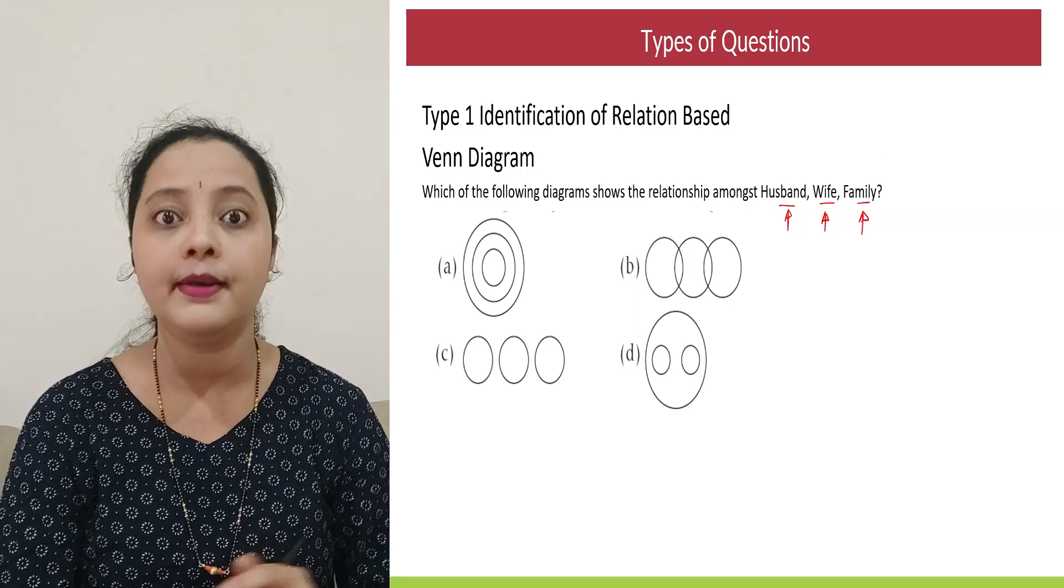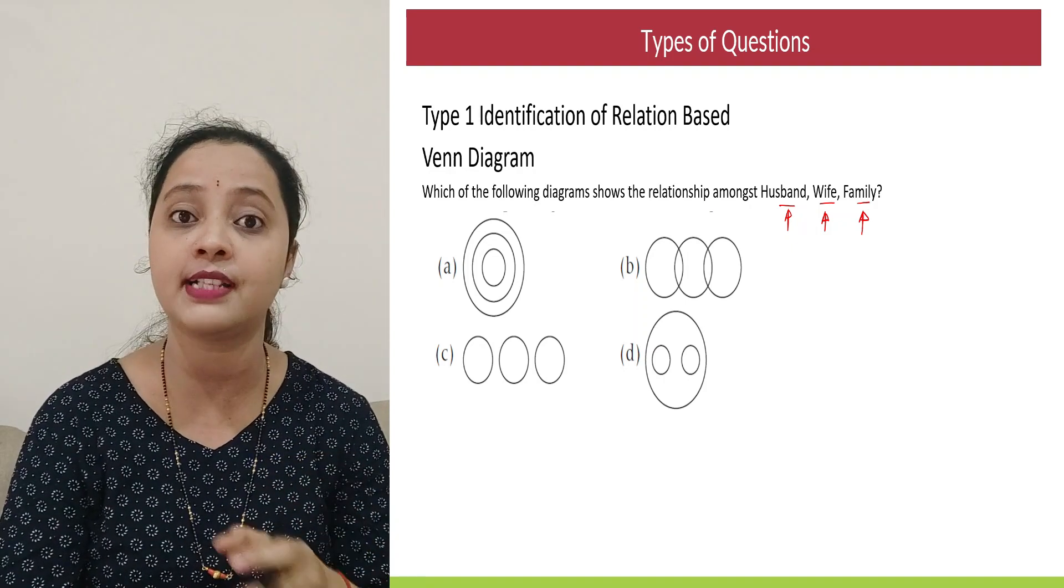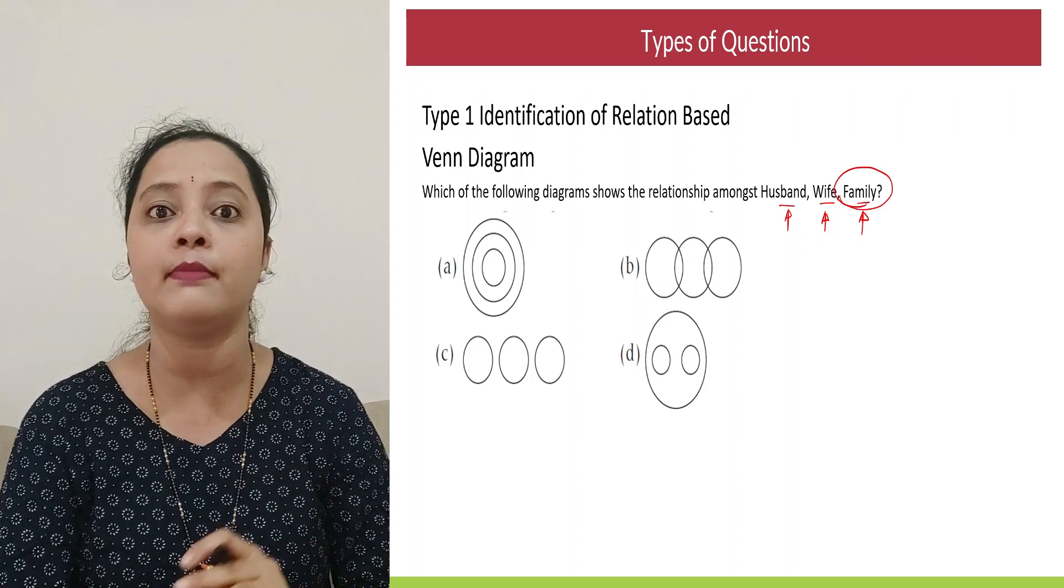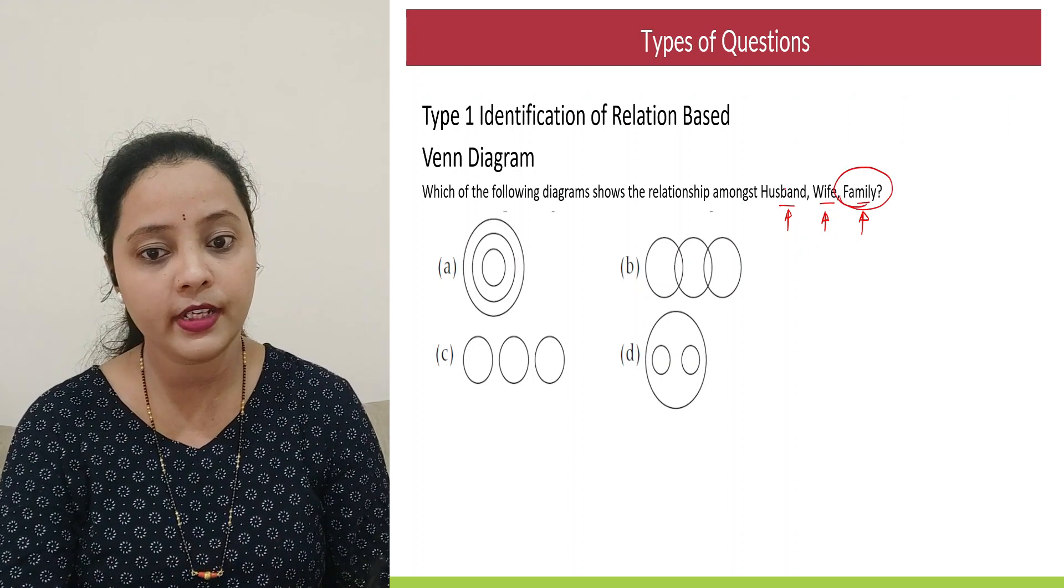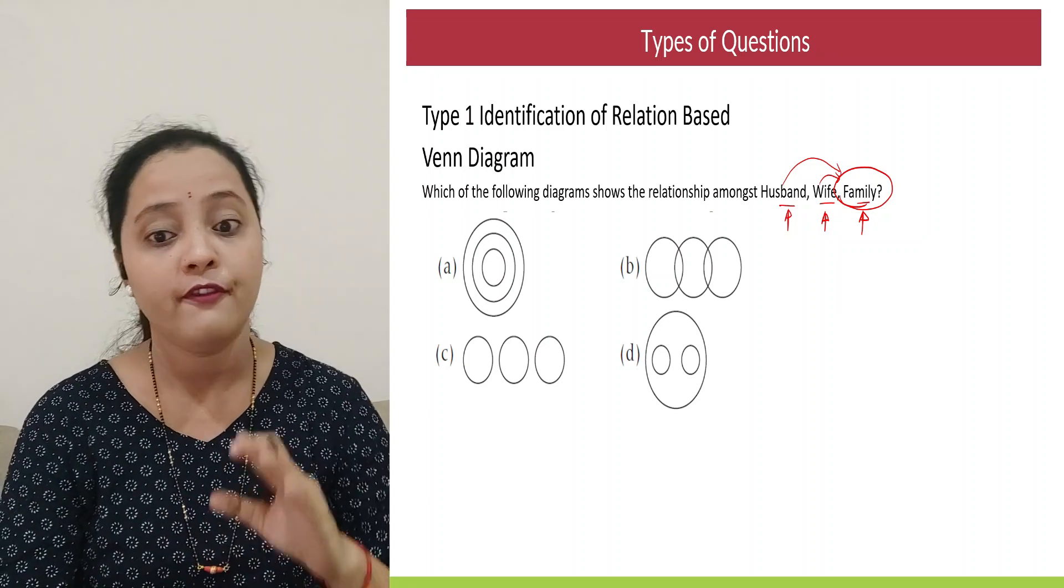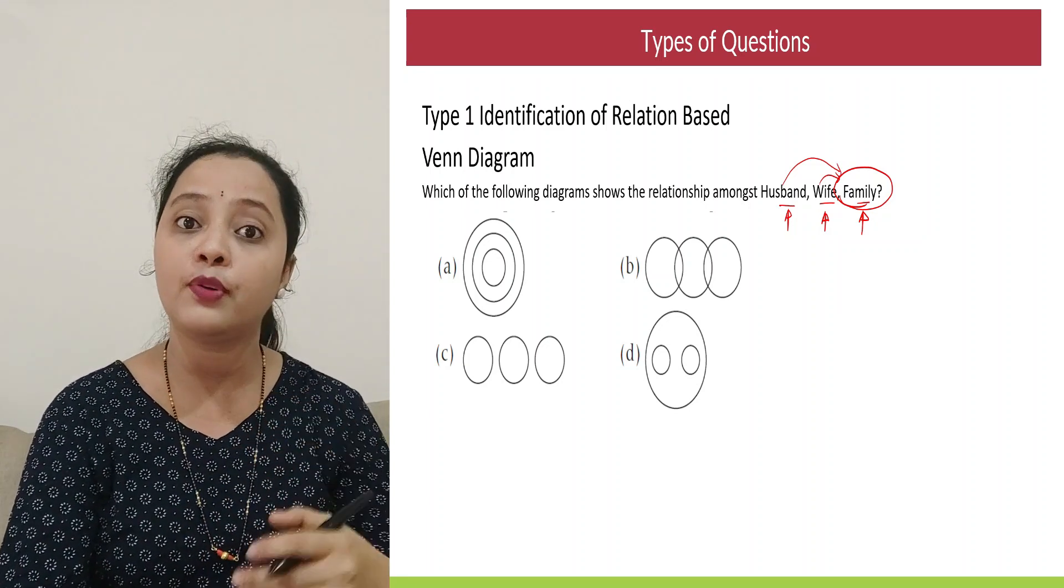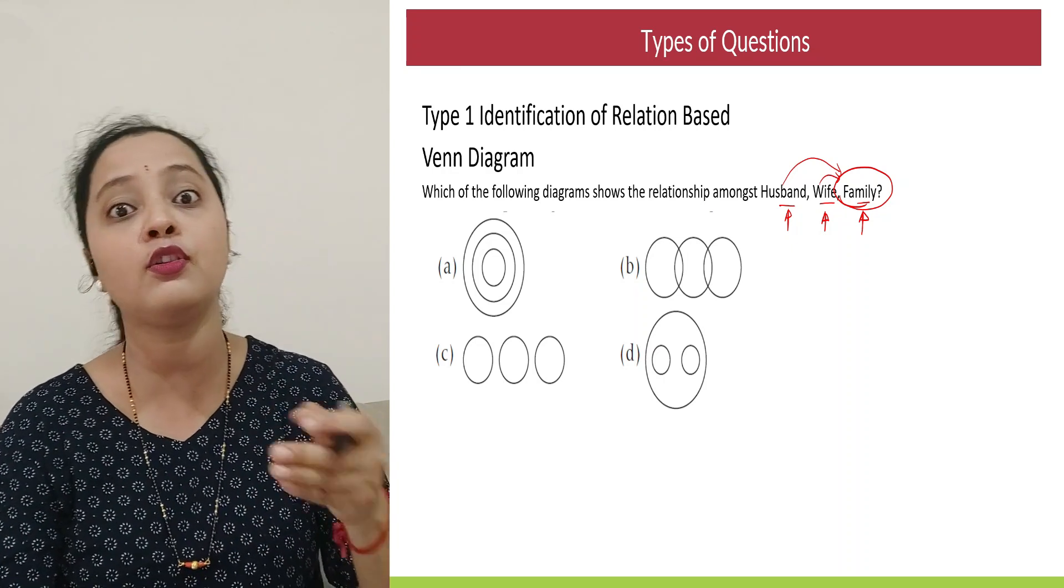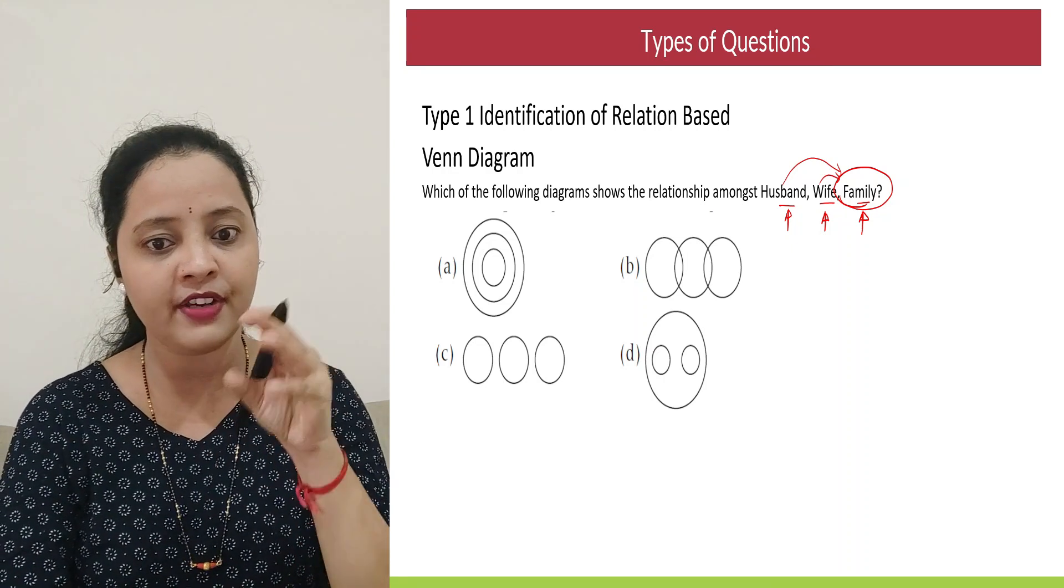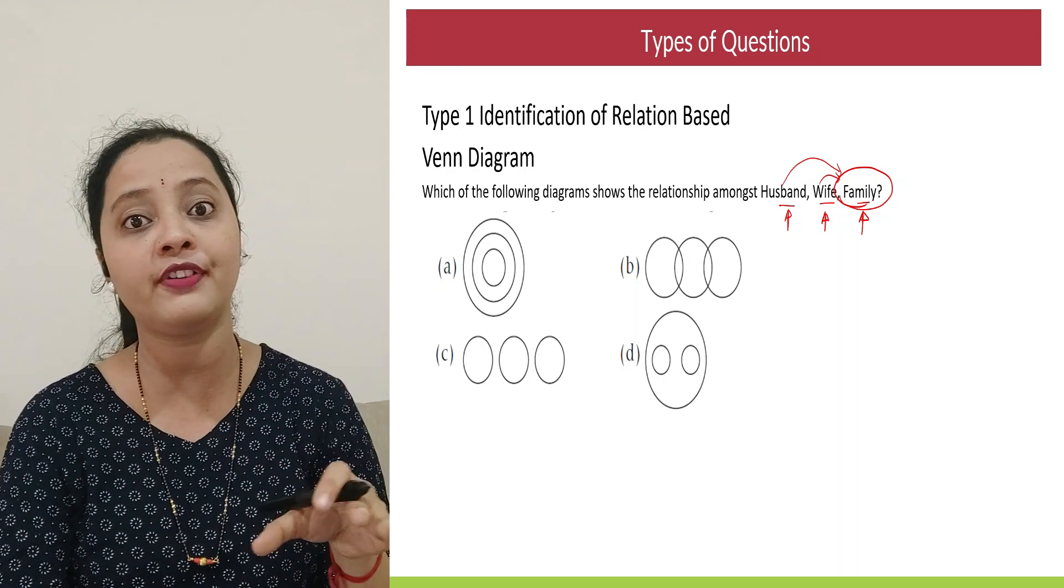Now, when it comes to family, a family does include a husband and a wife. It does have a couple. It has children. So family is our main element in our question. And what are husband and wife? They are part of a family. Again, will husband and wife be only the part of family? No. There would be certain other components which can also be part of it.